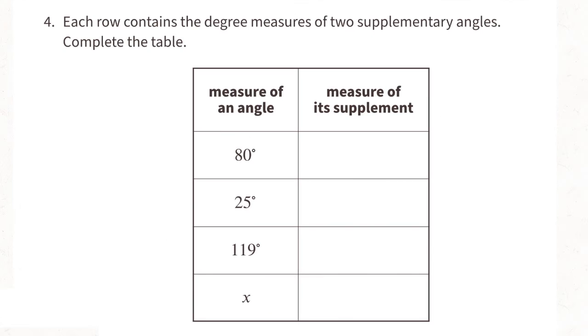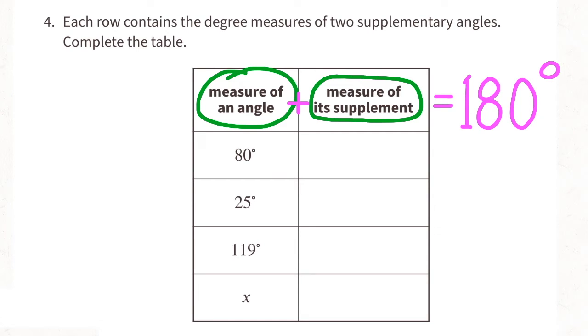Number 4. Each row contains the degree measures of two supplementary angles. Complete the table. The sum of two supplementary angles is 180 degrees. 80 degrees plus 100 degrees equals 180 degrees. 25 degrees plus 155 degrees equals 180 degrees.